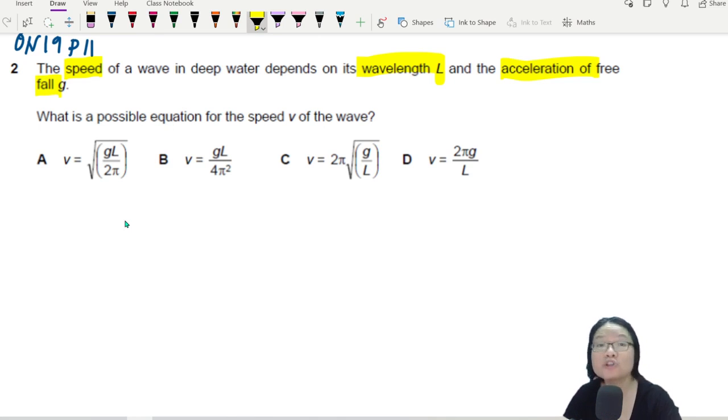Remember, homogeneous equation, meaning each term must have the same base SI unit. And then you're like, teacher, this equation only got two terms. Yeah, easy, you got two terms. So if there's only two terms, we check both terms.